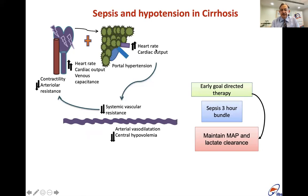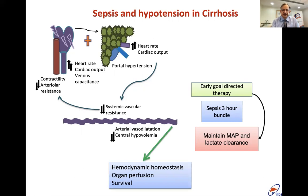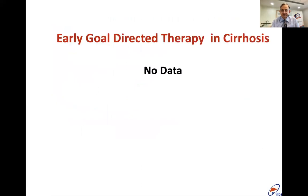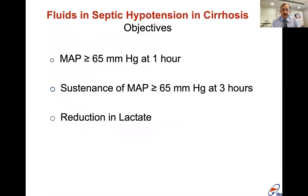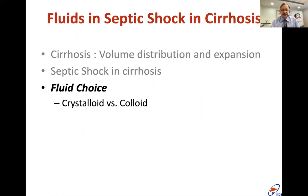If there is infection or sepsis, these patients experience a much more rapid decrease in blood pressure. Our aim is to give early goal-directed therapy and within three hours try to maintain mean arterial pressure and improve lactate clearance. It is not fully known what the best drug is; our objective is to increase and sustain the MAP and reduce lactate.